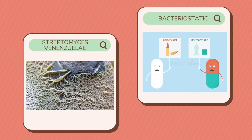It is an antibiotic with a wide range of activity that was originally derived from the bacterium Streptomyces venezuelae, but is now produced synthetically. Chloramphenicol is bacteriostatic, but it has the potential to kill bacteria when used in high concentration or when applied to organisms with a high level of susceptibility.